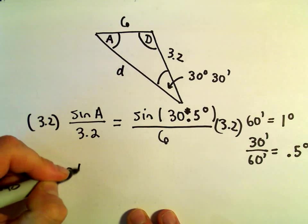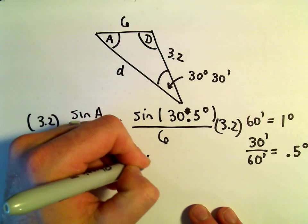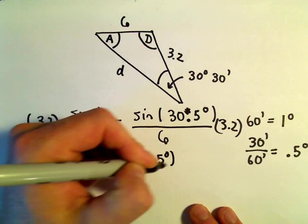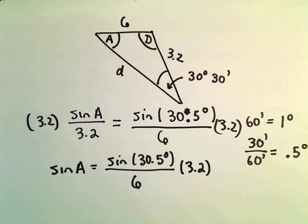So we'll get sine of A equals sine of 30.5 degrees over 6 multiplied by 3.2. So let's calculate this here. So 30.5, if we do sine of 30.5,